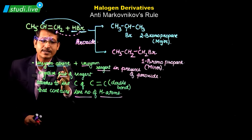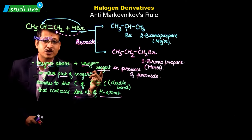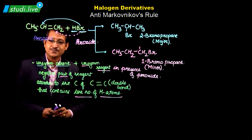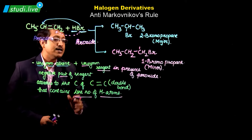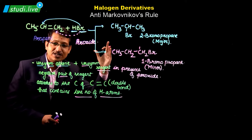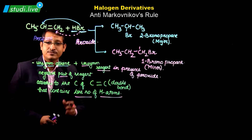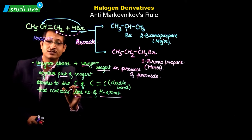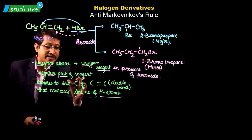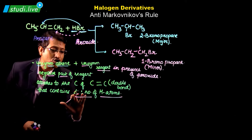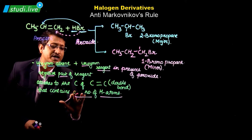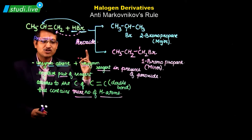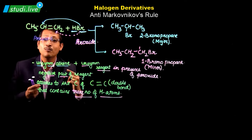Getting back to the statement: when an unsymmetrical alkene reacts with an unsymmetrical reagent — we know HBr is our unsymmetrical reagent because it is H⁺ and Br⁻ — in presence of peroxide, the negative part of the reagent attaches to the carbon of the carbon-carbon double bond which contains more number of hydrogen atoms. That is the key change: instead of less number of hydrogen, it is now more number of hydrogen atoms.